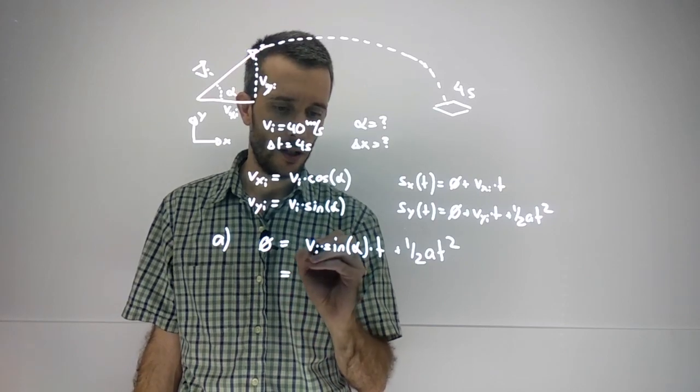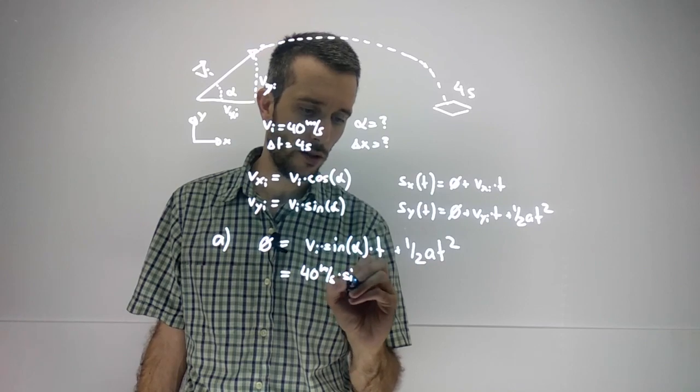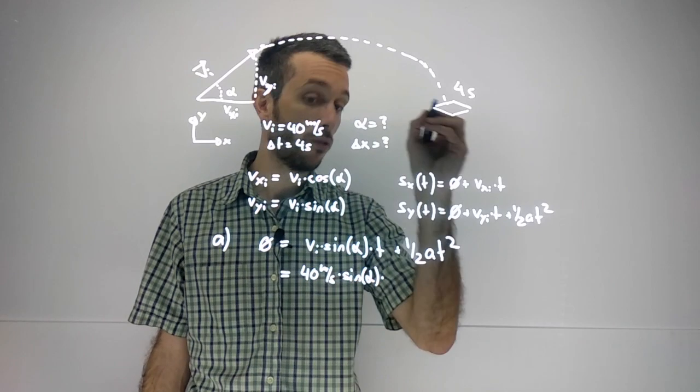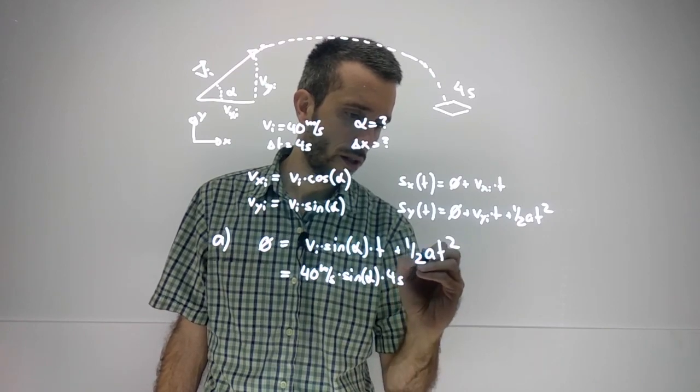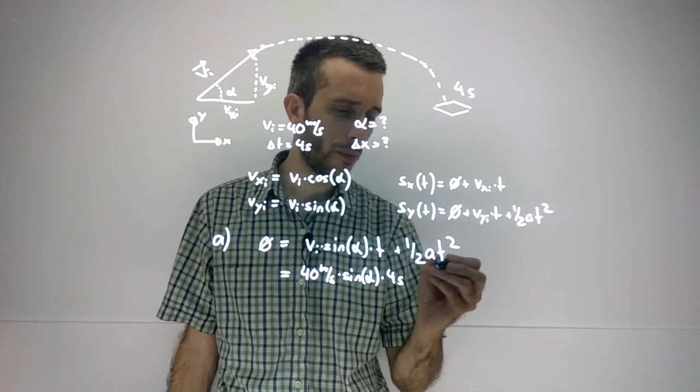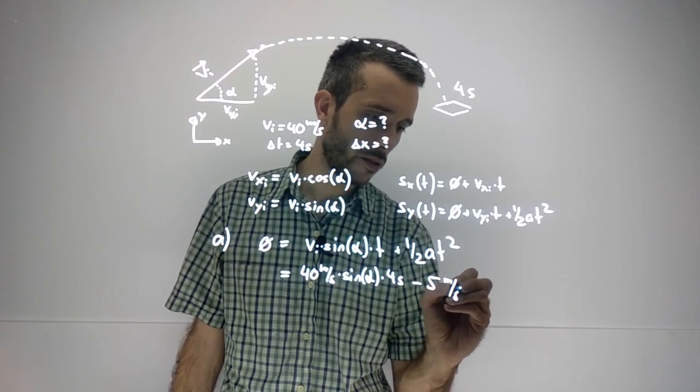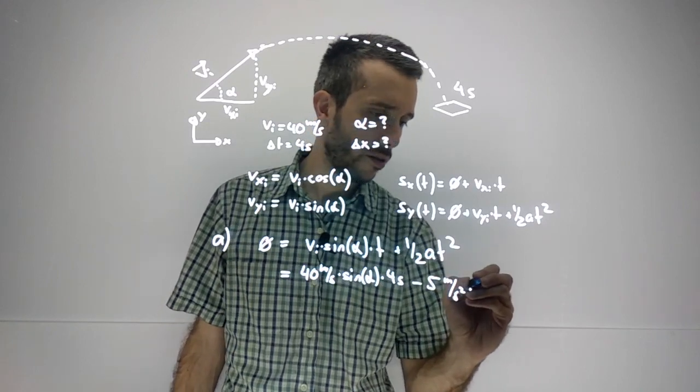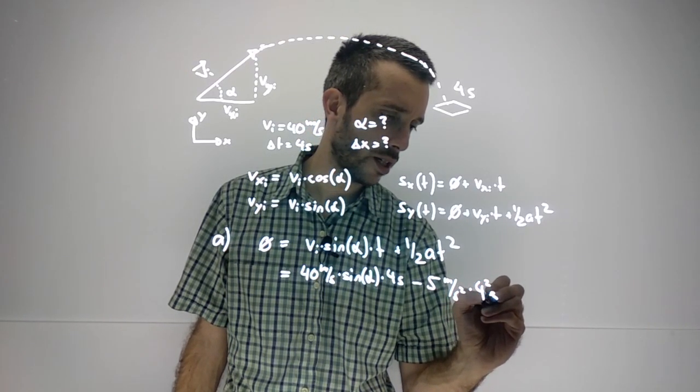plus one half acceleration times t squared. So in my case, the initial was 40 meters per second, times sine of the unknown angle, times 4 seconds. Then for the acceleration, I'm going to be rounding to minus 10, so I'm going to use minus 5 meters per second squared, times 4 squared is 16.